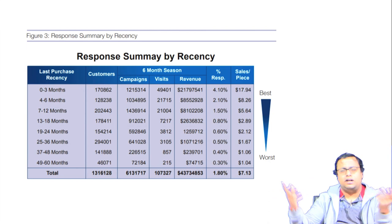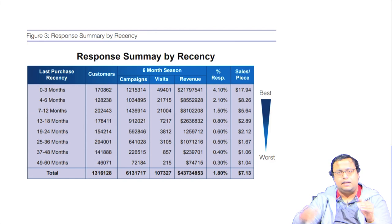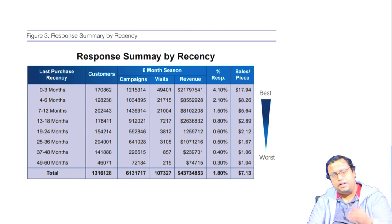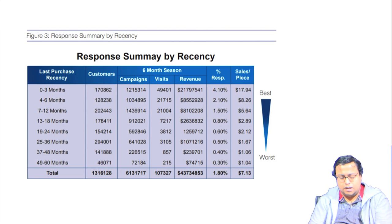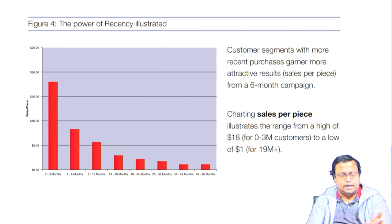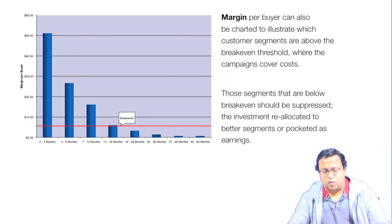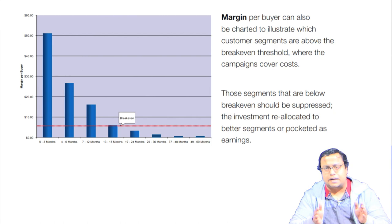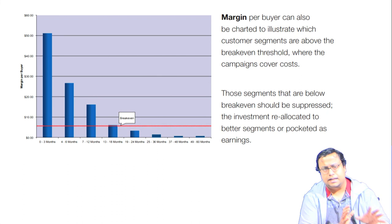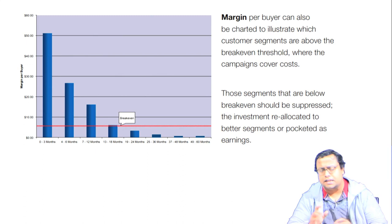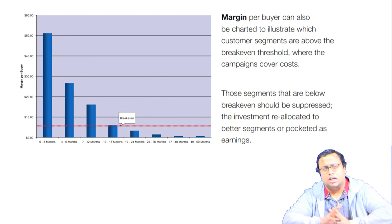Empirically, it has been seen that people whose last purchase is very recent have much higher purchase revenue and margin compared to those whose purchase was far in the past. From best to worst recency, revenue and margin decrease. Sales per piece — revenue generated per piece — is also high when the time distance from last purchase is low. The overall margin and overall revenue are also high when the customer bought something very recently. That is why recency is given so much focus in RFM.